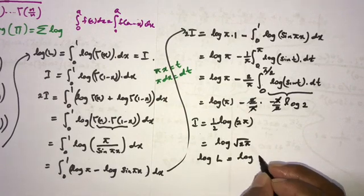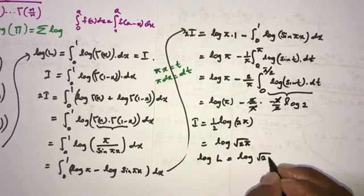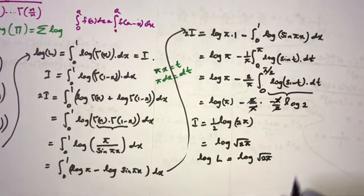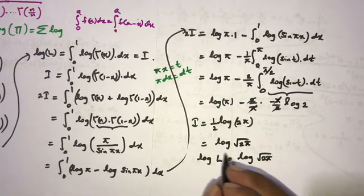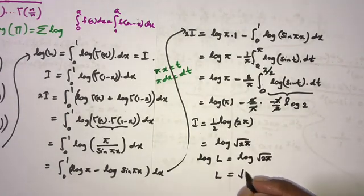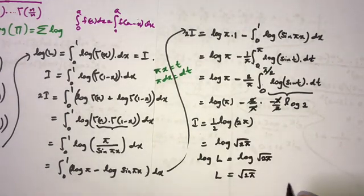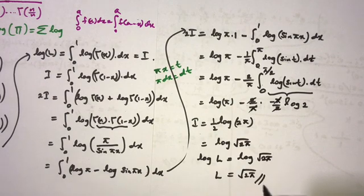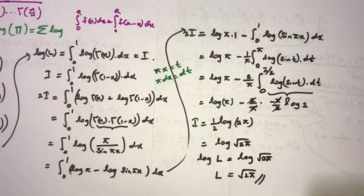Since I also equals natural log of L, we have natural log of L equals natural log of the square root of 2pi. Therefore L equals the square root of 2pi. This is the answer. If you like this video, please subscribe to the channel. Thank you for watching.